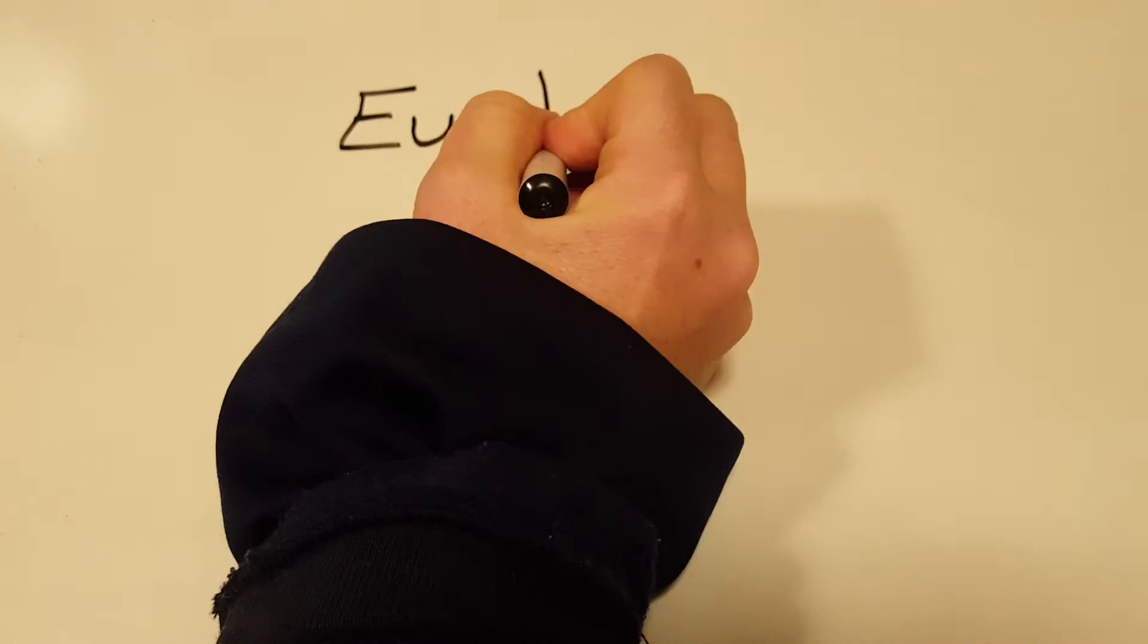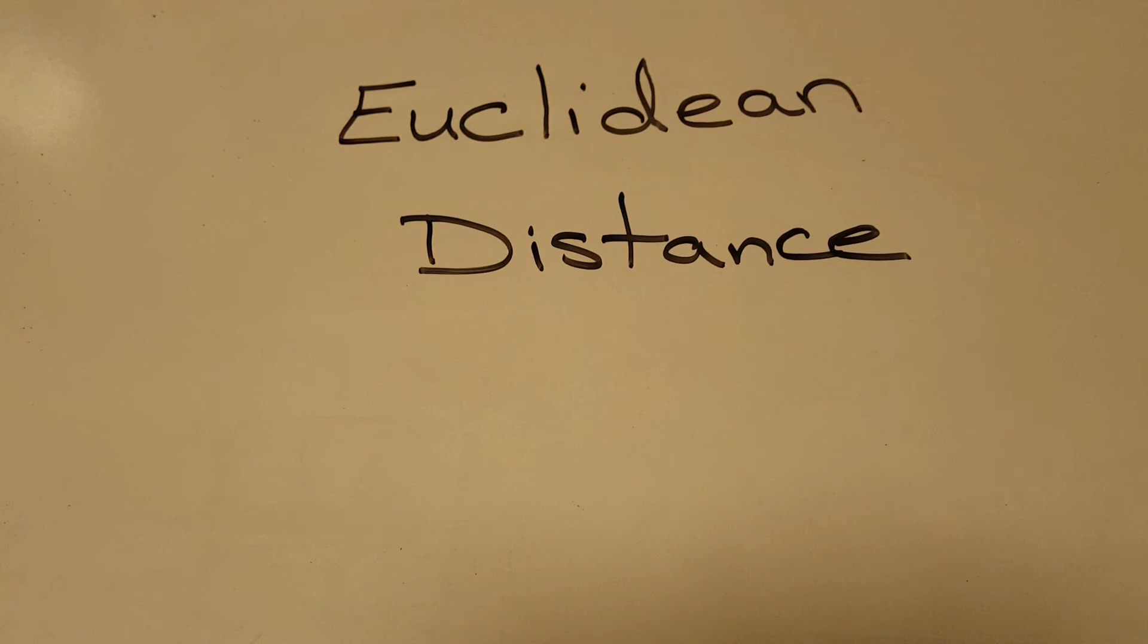What we can do is we can use the Euclidean distance to check how similar these things are. So what do we mean by Euclidean distance? Well it's not so much a machine learning technique as opposed to a tool that can be used to test how similar objects might be to one another.